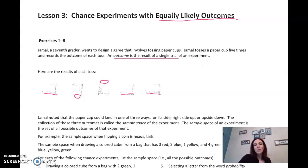Jamal noted that the paper cup could land one of three ways: on its side, right side up, or upside down. On its side here, that is a possible outcome. Right side up, like this one right here, that's an outcome. Upside down, like this one right here, that's an outcome. Because remember, an outcome is a single trial. If you get it on its side, that's an outcome. If it's upside down, it's an outcome.